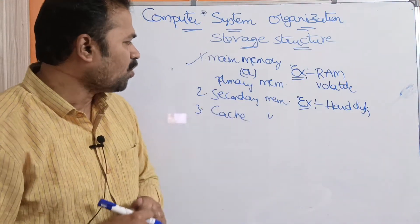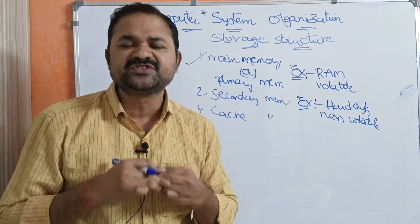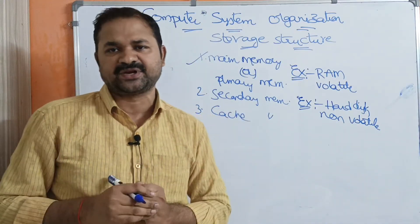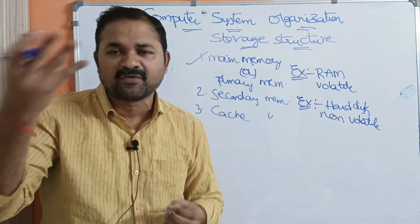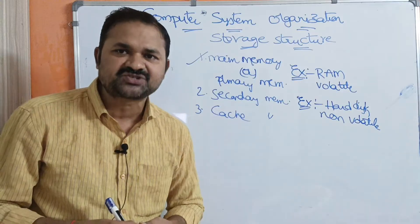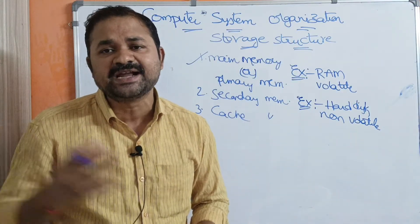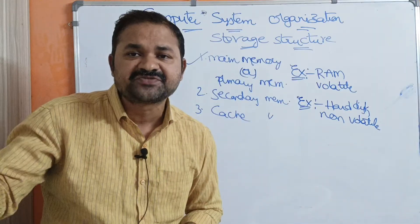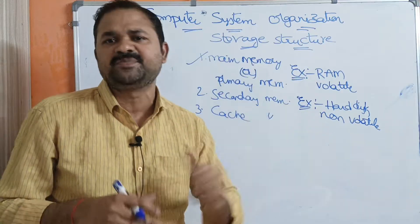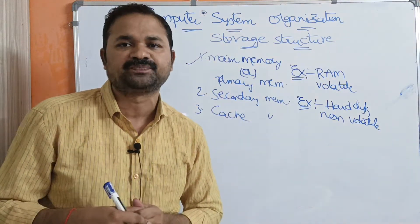Secondary memory is non-volatile memory, which means when we switch off the computer, those contents will not be lost — the content permanently resides in the computer. For example, Microsoft Word, PowerPoint, or Excel software will be stored in secondary memory. But if we open a Word document or Excel document, that document will be transferred from hard disk to main memory, because while typing we need the CPU, and it is the responsibility of the operating system to transfer the document from secondary memory to main memory.